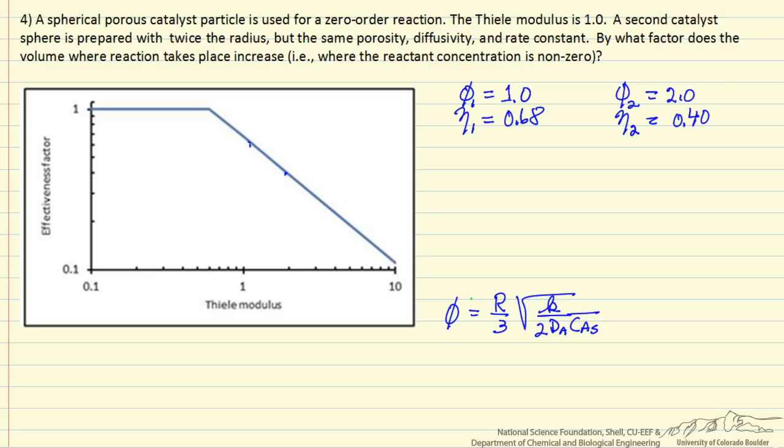Since we're interested in what's the volume where the reaction is taking place for the two catalysts, the first one has the total volume, and the second one, we've doubled the radius. So this becomes 8 times the original volume.